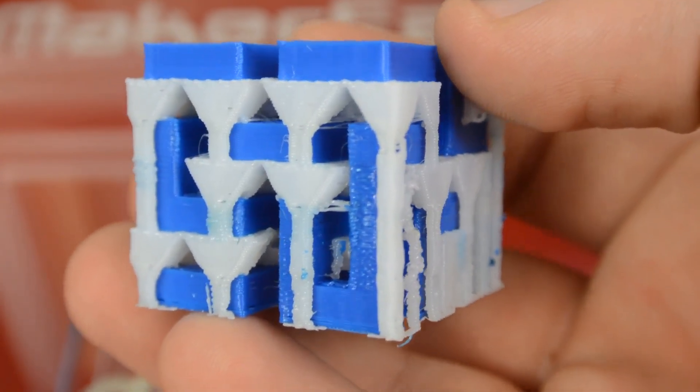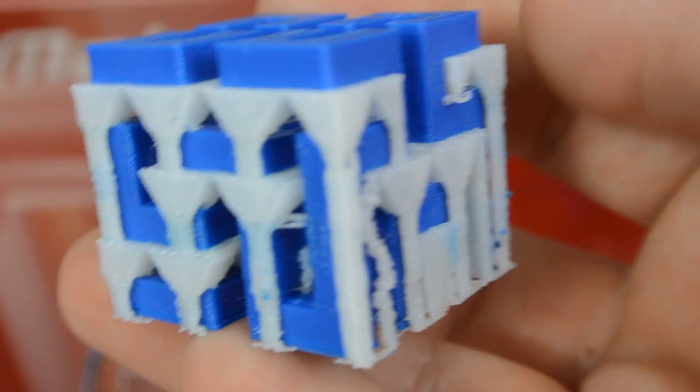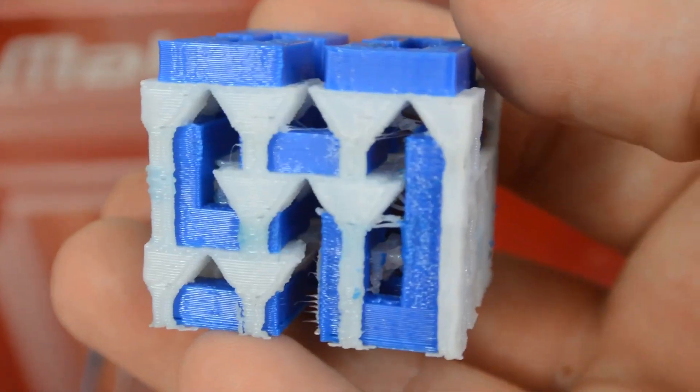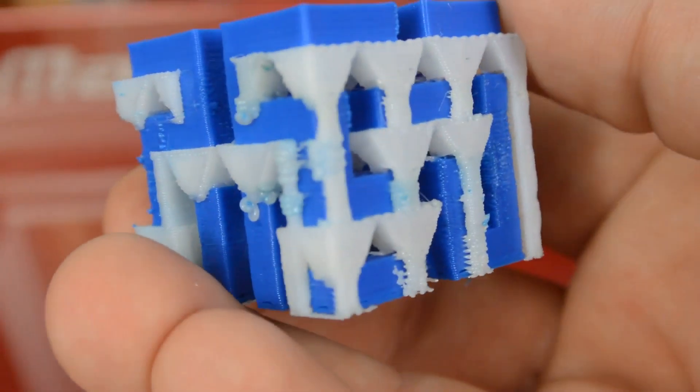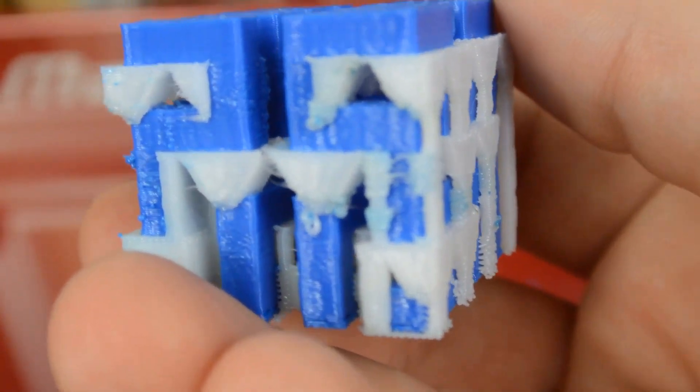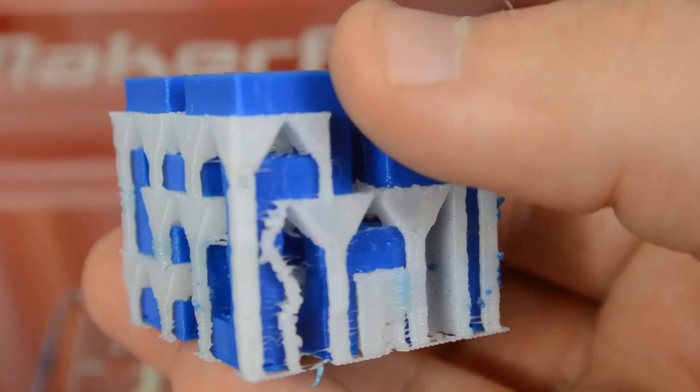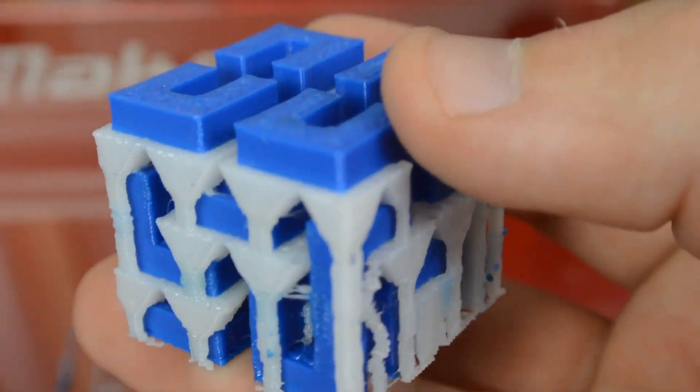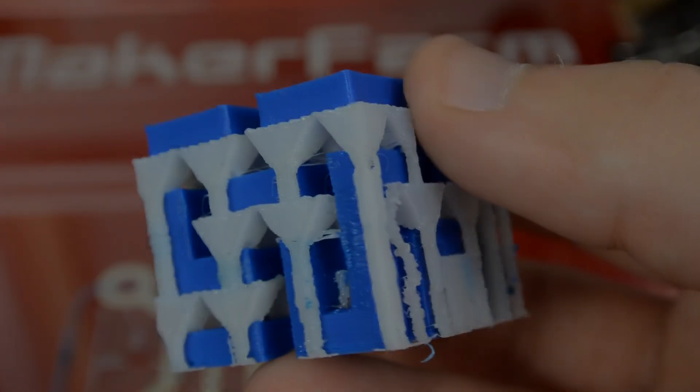So, if we just take a few seconds to look at the path of the blue filament, the model that we're actually printing, you can see how much of a pain it would be without some kind of dissolvable support material. Trying to remove ABS supports from this would be almost impossible. So, hopefully, if the HIPS actually works as I expect it to, this could be a very useful tool for later prints that I'm planning on doing.